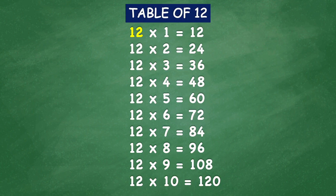Table of 12: 12 times 1 equals 12, 12 times 2 equals 24, 12 times 3 equals 36, 12 times 4 equals 48, 12 times 5 equals 60, 12 times 6 equals 72, 12 times 7 equals 84, 12 times 8 equals 96, 12 times 9 equals 108, 12 times 10 equals 120.